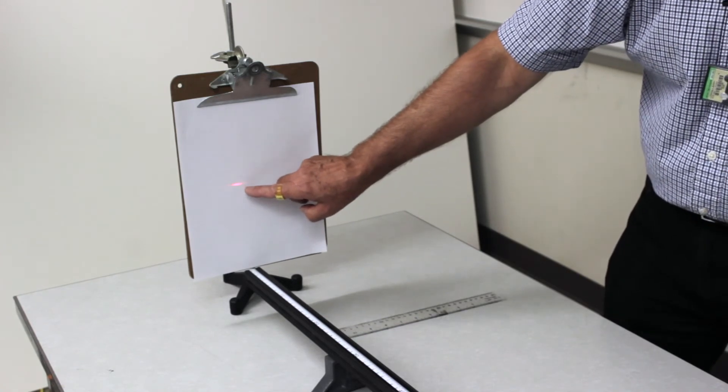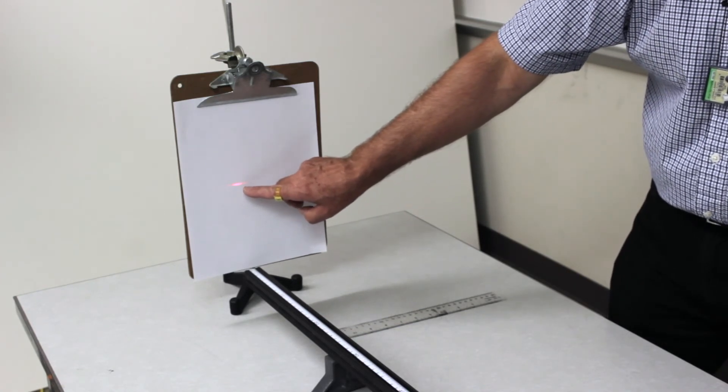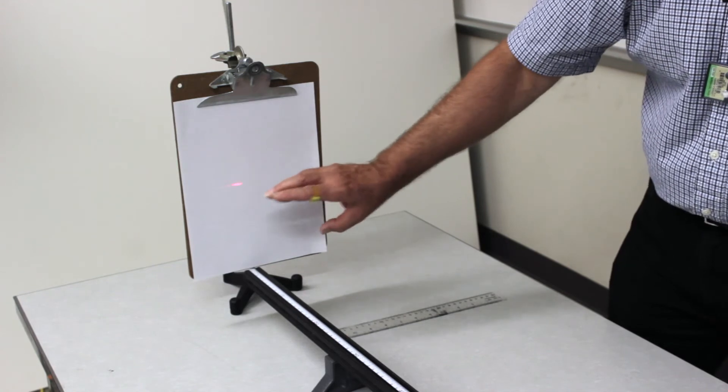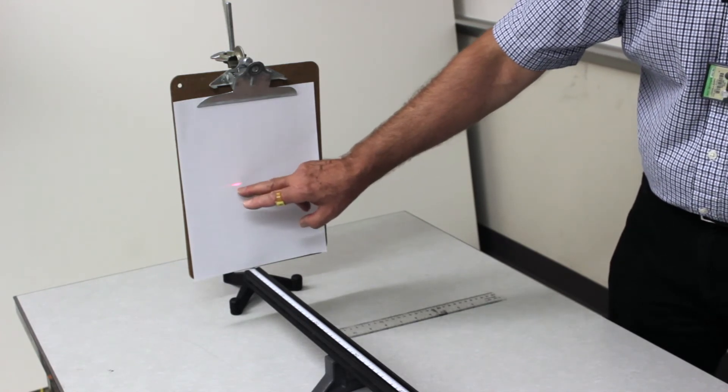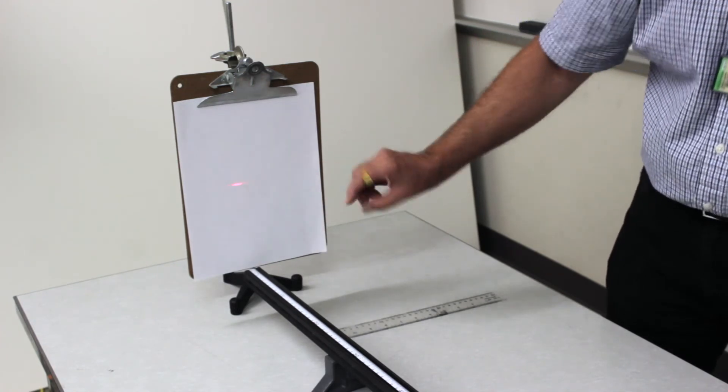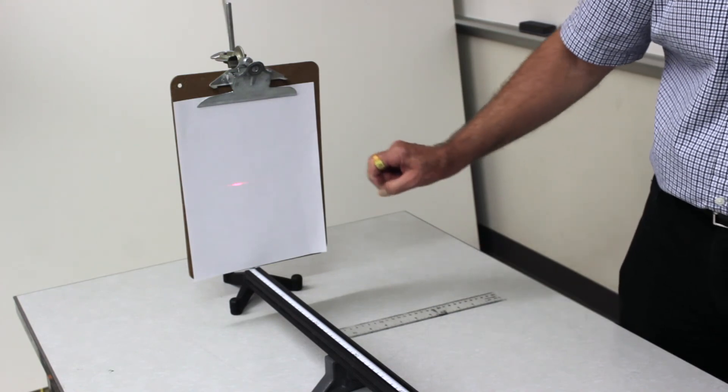If you see the big blob, then you'll have to readjust the laser to make sure that you're hitting both of the slits at the same time. And this central blob will then break up into uniform bright spots for the double-slit.